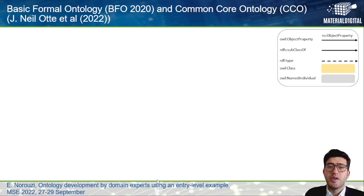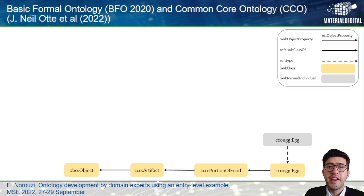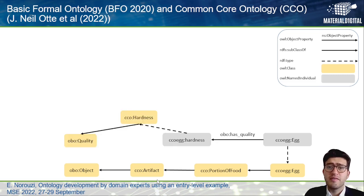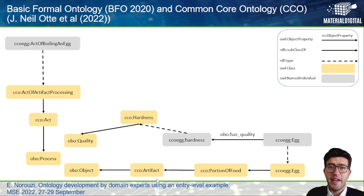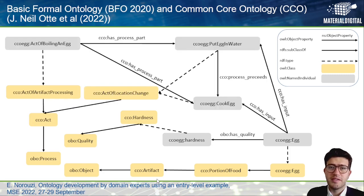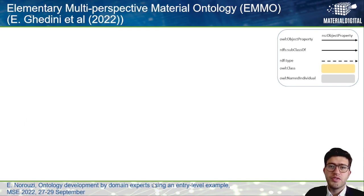The BFO is an upper-level ontology, and CCO extends the generic entities introduced in BFO. Here, egg is introduced as a subclass of 'portion of food,' and egg is related to hardness as a quality of that, and 'act of boiling an egg' is introduced as a process with some process steps and the inputs related to them.